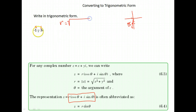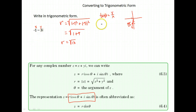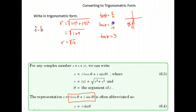To find r, we take the square root of x squared plus y squared: square root of negative 1 squared plus negative 3 squared, giving the square root of 1 plus 9, which equals the square root of 10. To find theta, the tangent of theta is y over x: negative 3 over negative 1, so tangent of theta equals positive 3.